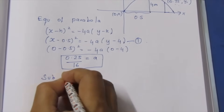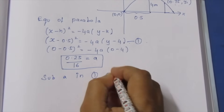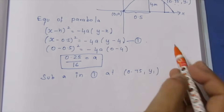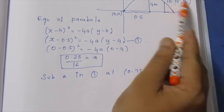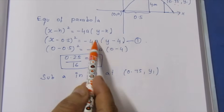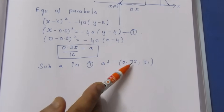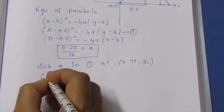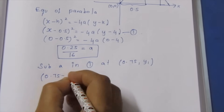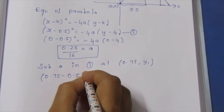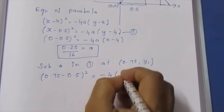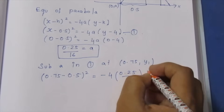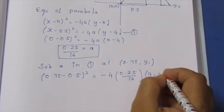Now we substitute the value of 'a' back into the equation at x = 0.75. We substitute: 0.75 minus 0.5, the whole square equals minus 4 into (1/16) into (y1 minus 4). That gives us 0.25 squared equals minus (4 times 0.25 by 16) into (y1 minus 4).